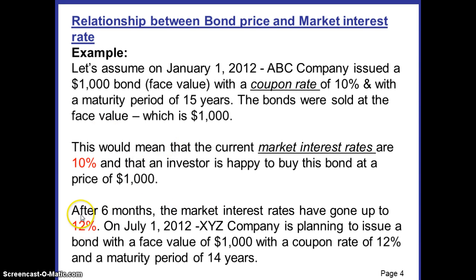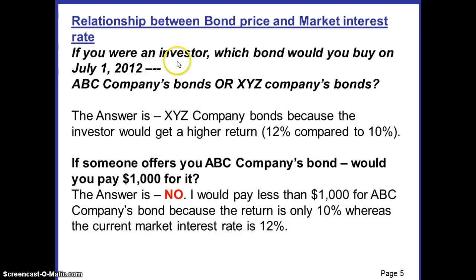Now let's say after six months the market interest rates have gone up to 12% from 10%. On July 1, 2012, XYZ Company — another company — is planning to issue a bond with the same $1,000 face value, a coupon rate of 12%, and a maturity period of 14 years. The question is: if you were an investor, which bond would you buy on July 1 — the ABC Company bond or the XYZ Company bond?